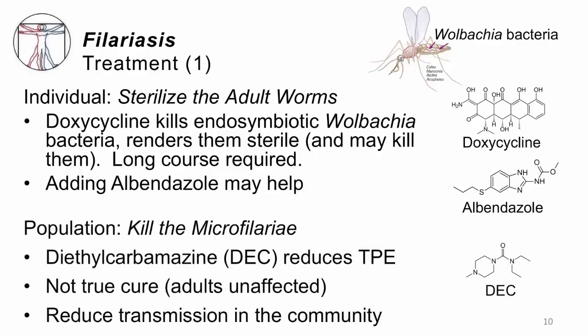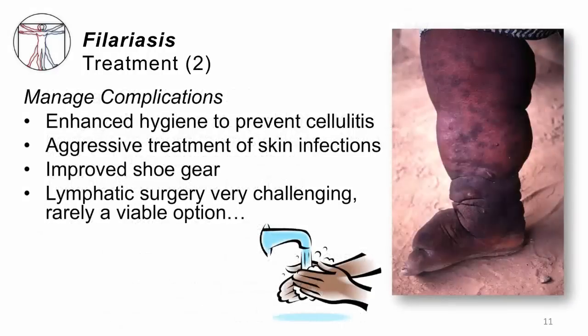For population-level treatment, there's a drug called DEC — diethylcarbamazine — which reduces tropical pulmonary eosinophilia. Although it does not target the adults, it kills the babies. It doesn't truly cure patients since the adults are still there, but it can reduce transmission in the community and reduce wheezing and coughing in those with many microfilariae in their lungs. The second part of treatment is managing complications: reducing cellulitis is important, so patients need access to clean water, soap, good shoe gear, and measures to reduce bacterial invasion of the skin. In severe cases, we can try to repair dilated lymphatic channels, but that is very challenging and unfortunately often not an option in advanced filariasis.